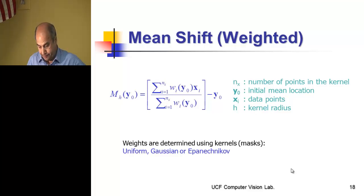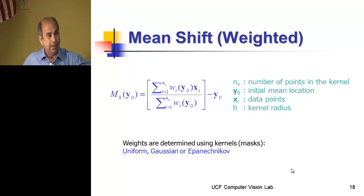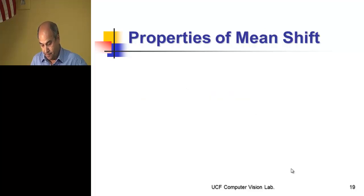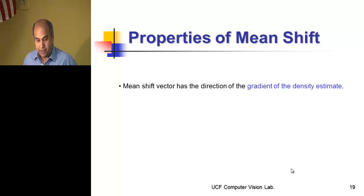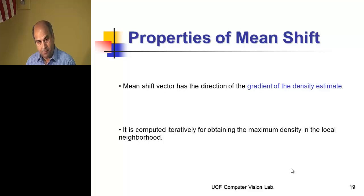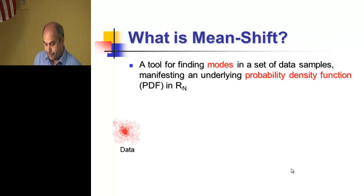The weights are determined by different kernels: a uniform kernel which assigns equal weights, a Gaussian kernel, or the Epanechnikov kernel from a Russian researcher. The mean shift vector is a direction of the gradient of the density estimate — this is important. It is computed iteratively and converges to the maximum density in the local neighborhood.